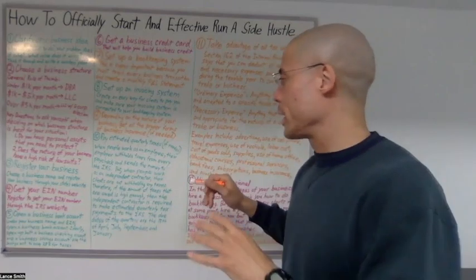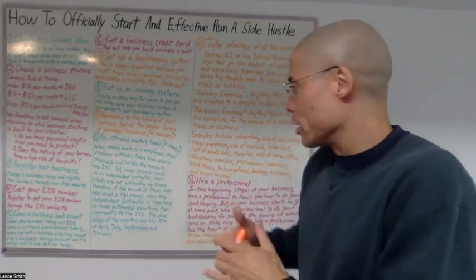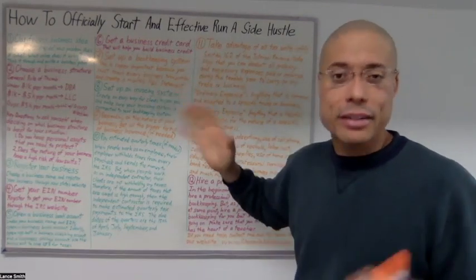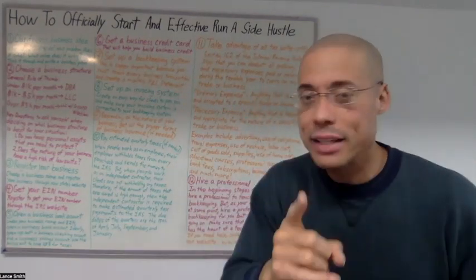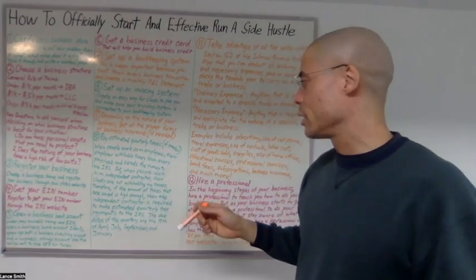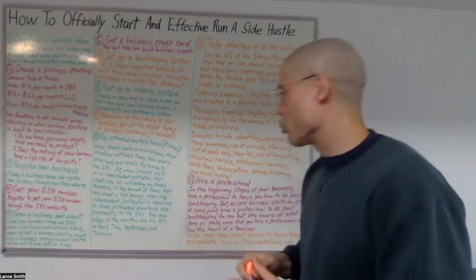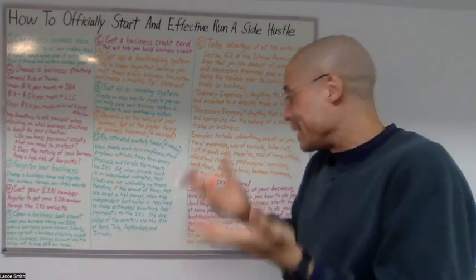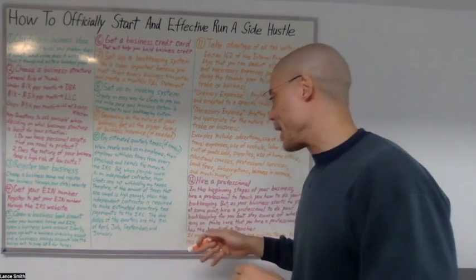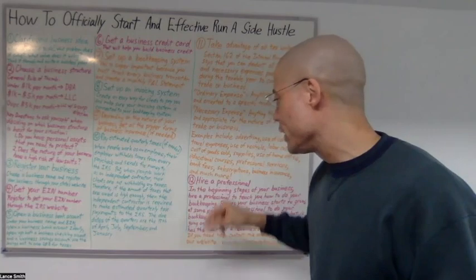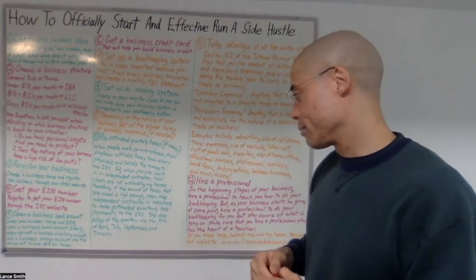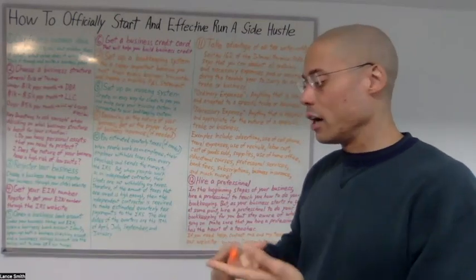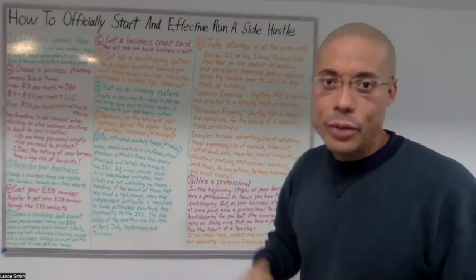Here's the background. When people work as an employee, their employer withholds taxes from every paycheck and sends the money to the IRS. But when people work as an independent contractor, their clients are not withholding any taxes. Therefore, if the amount of taxes owed is high enough, the independent contractor is required to make estimated quarterly tax payments to the IRS. The due dates of the quarters are the 15th of April, July, September, and January.